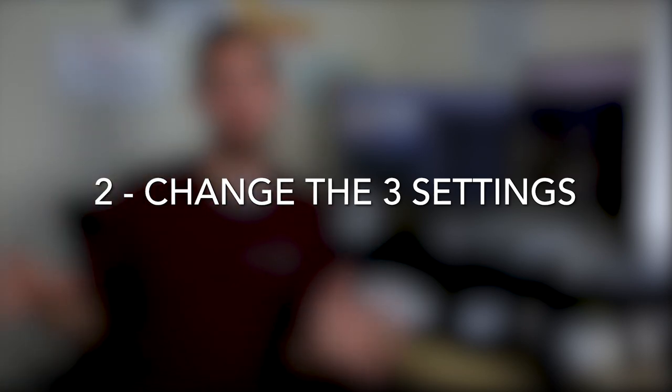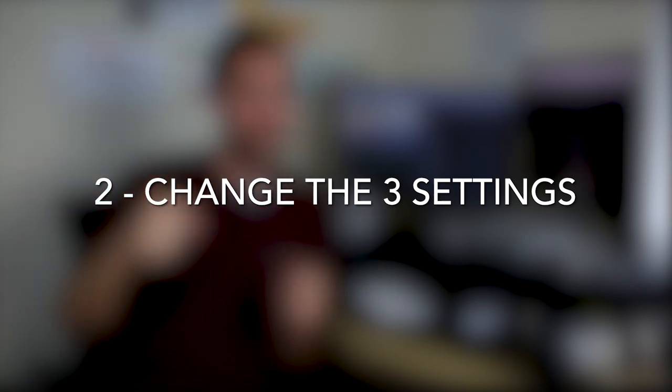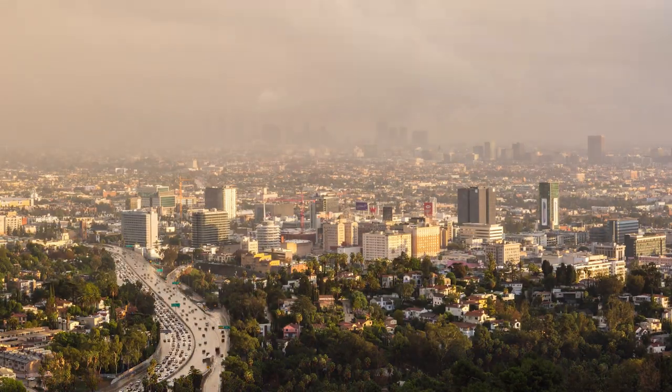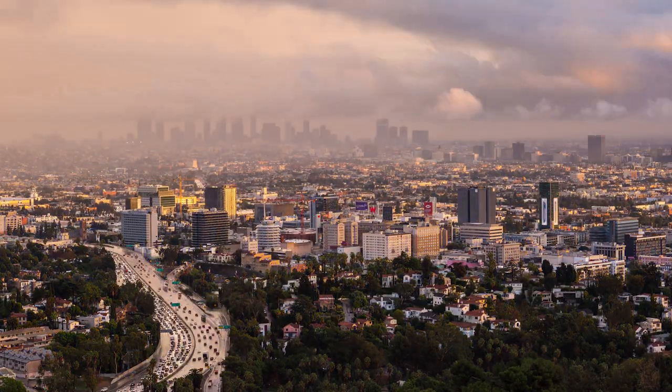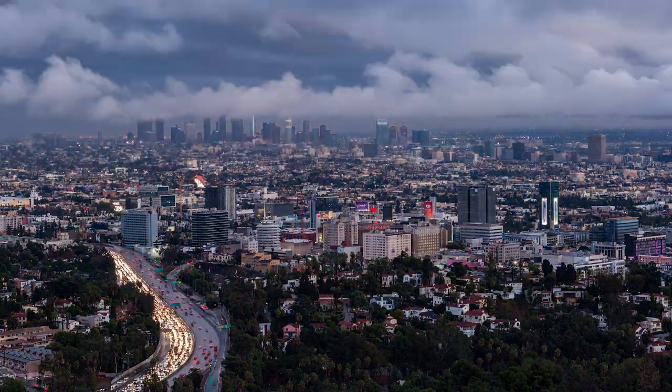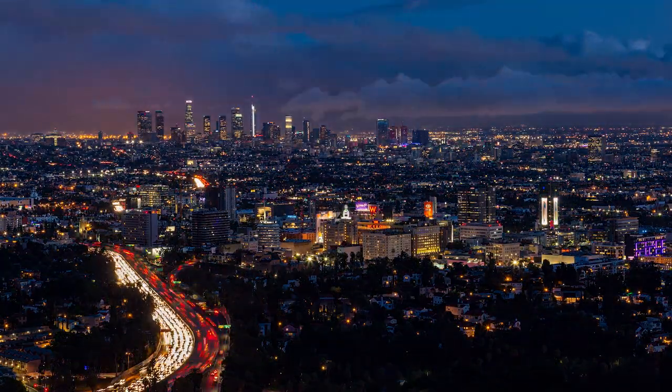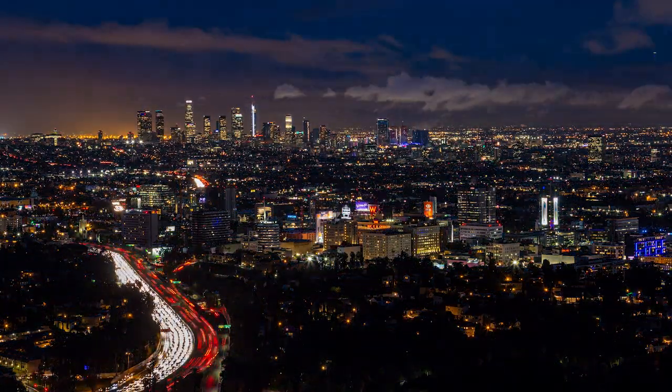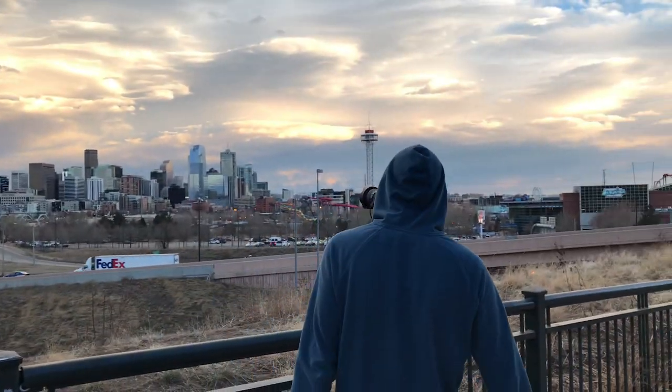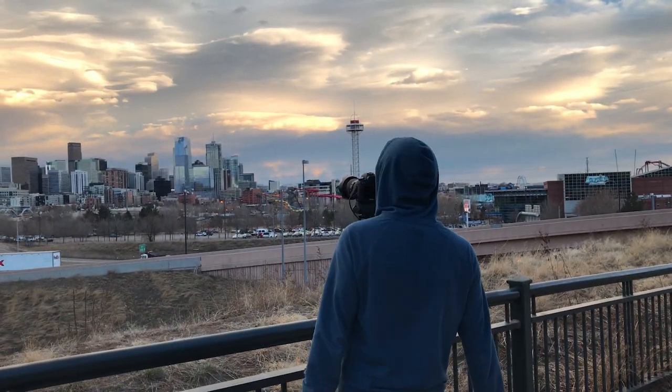Number two: change a little bit of all three settings and not just one. We all know that each setting affects your photo one way or another. So if you get a slower shutter speed that creates light trails, a wider aperture means a smaller depth of field, and finally more ISO means more grain. We all know that. So it's great to change all three settings a little bit and not just one all the time.